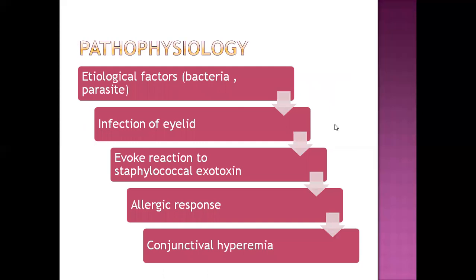In the pathophysiology of blepharitis, etiological factors such as bacteria and parasites create a risk to the eye, leading to infection of the eyelid. This infection evokes a reaction to staphylococcal exotoxin — the infection releases toxins that trigger an allergic response. The body responds with symptoms like itching or burning sensation in the eye. This leads to conjunctival hyperemia — excess blood supply to the conjunctiva — which creates redness in the eye.